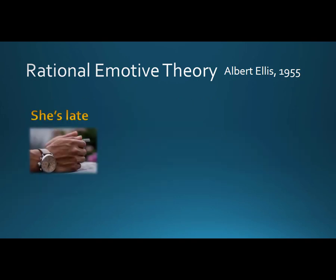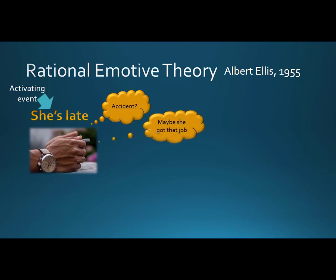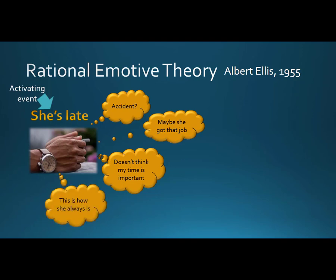Say your friend is late for an appointment. That would be the activating event—the stimulus, or the catalyst that starts your thinking process. Your brain goes into action with thoughts, and there are a variety of thoughts to choose from: Could she have gotten into an accident? Maybe she's late because she got that job she was interviewing for. She doesn't think my time is important—well, that's just how she is, and so on. You are actually engaging in self-talk, and while you are talking to yourself, your emotions come into play—worry, hope, frustration, acceptance.